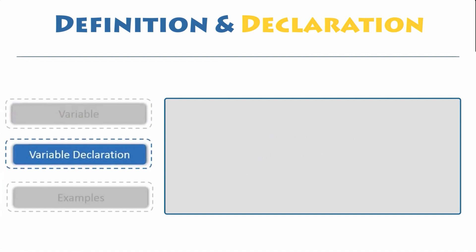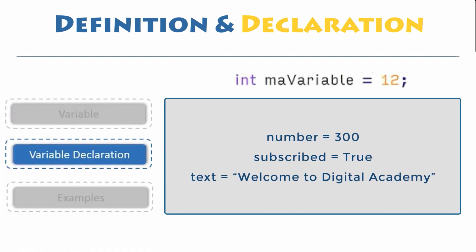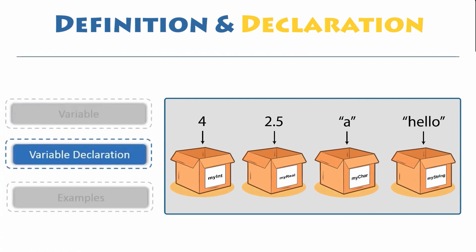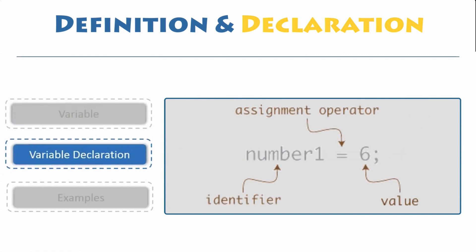Variable declaration. In Python, variables do not need to be defined or declared in advance with any particular type, as is the case in many other programming languages. Variables can even change type after they have been set. A variable is created as soon as a value is assigned to it, and then you can start using it.